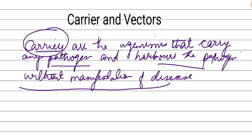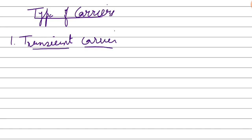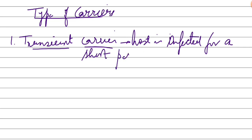So let's talk about types of carriers. The first type is transient carriers. Transient carriers are infected but only for a short period of time — the host is infected for a short period. For example, a person may have a cold or cough for a day or two, and the carrier can spread through air droplets while sneezing or coughing, but it resolves within a day or two.